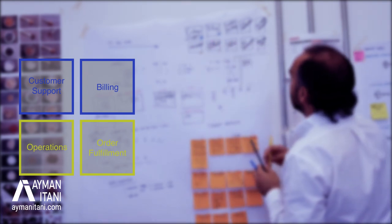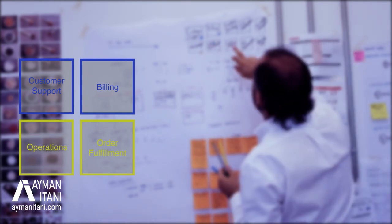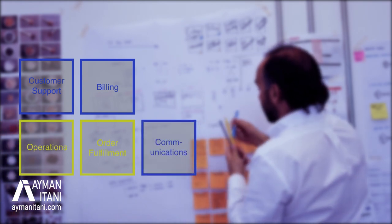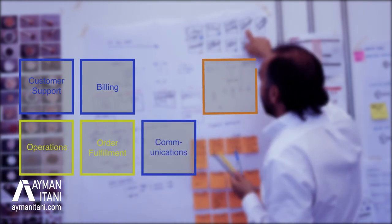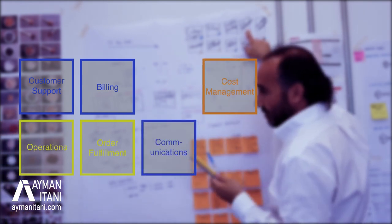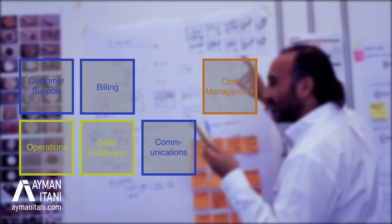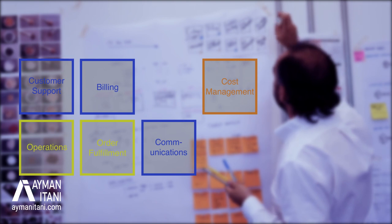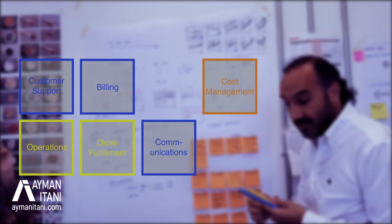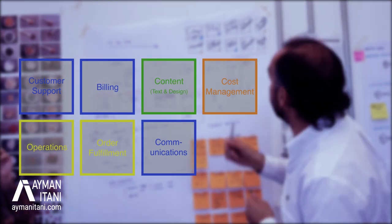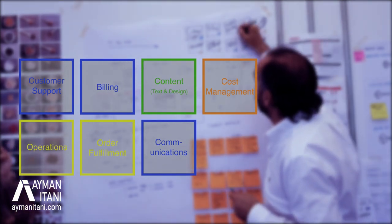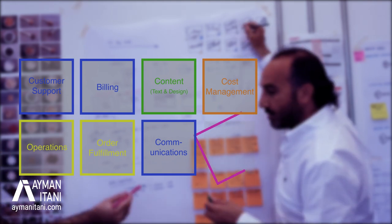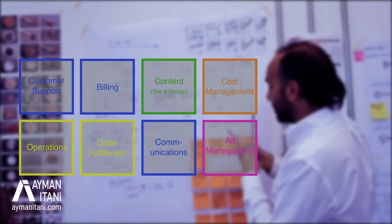Operations and fulfillment are under your partner — not a person, just under your partner. The communications part — posting and things like that — we can potentially add to one person. Cost management is more of a founder-level concern, not a separate hire. The content part — text and design — that's a separate person. And ad management is also a separate person.